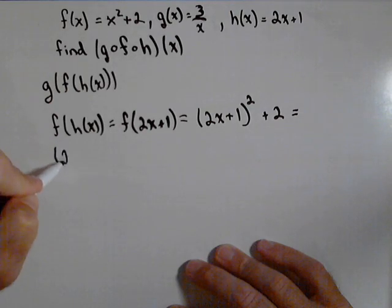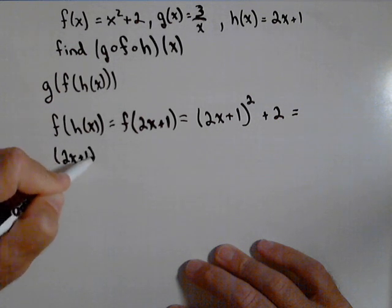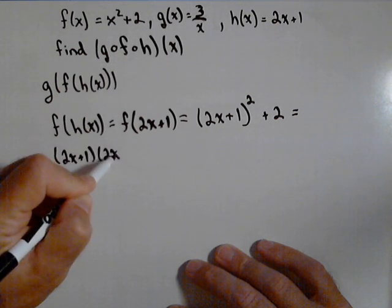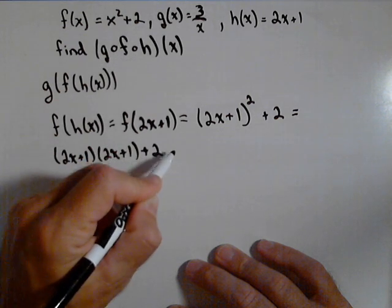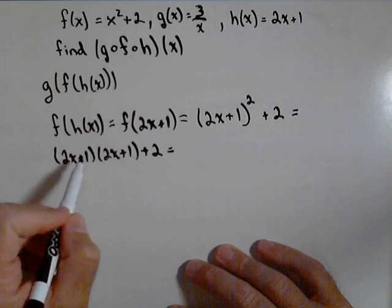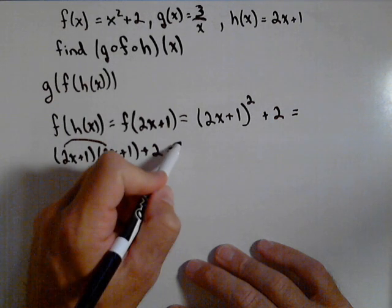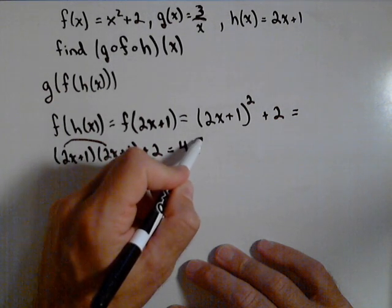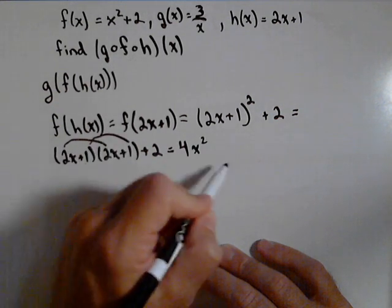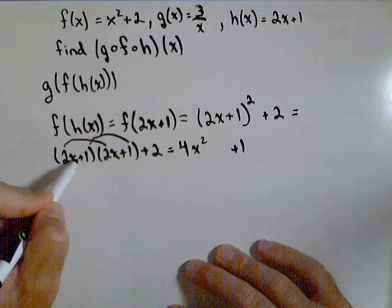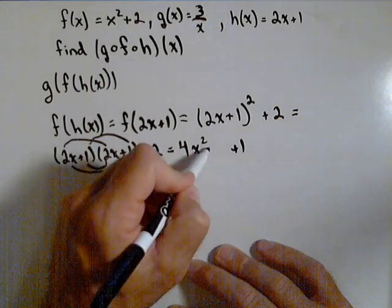It's actually two x plus one times two x plus one plus two at the end. So doing our foiling, we have four x squared plus one plus two x plus two x, so plus four x.